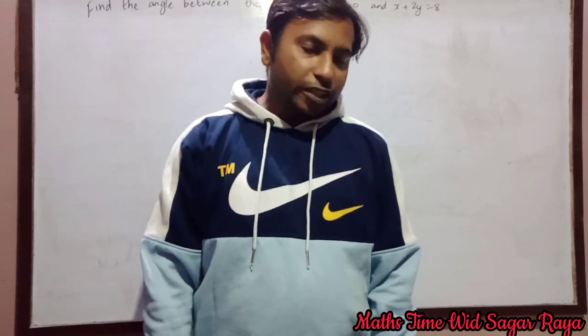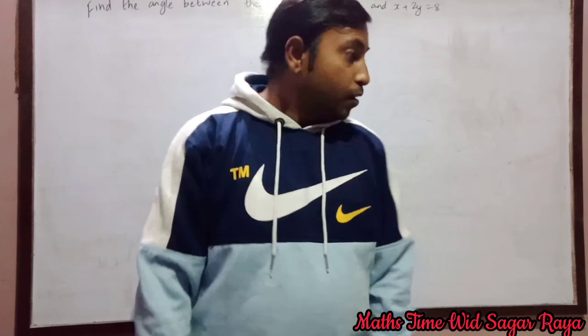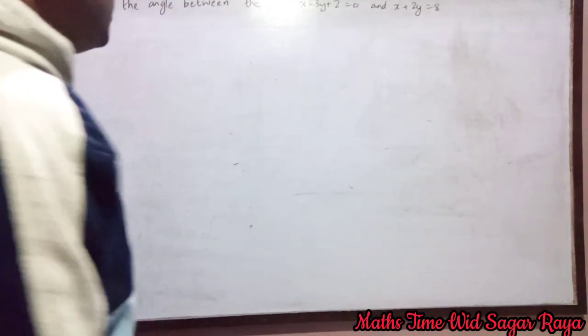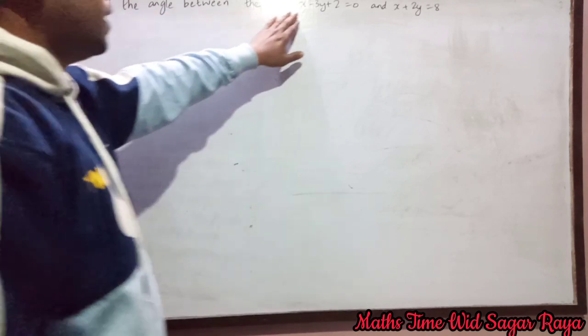Hello everyone, welcome to my channel Maths Time with Sagar Raya. Today I am back with another question from coordinate geometry. This is a very simple type of problem: find the angle between the lines x minus 3y plus 2 equal to 0...